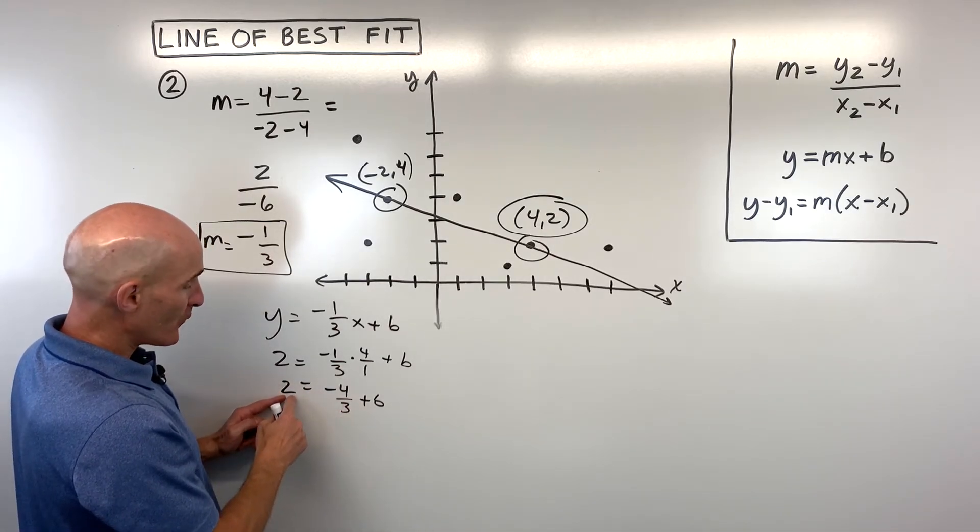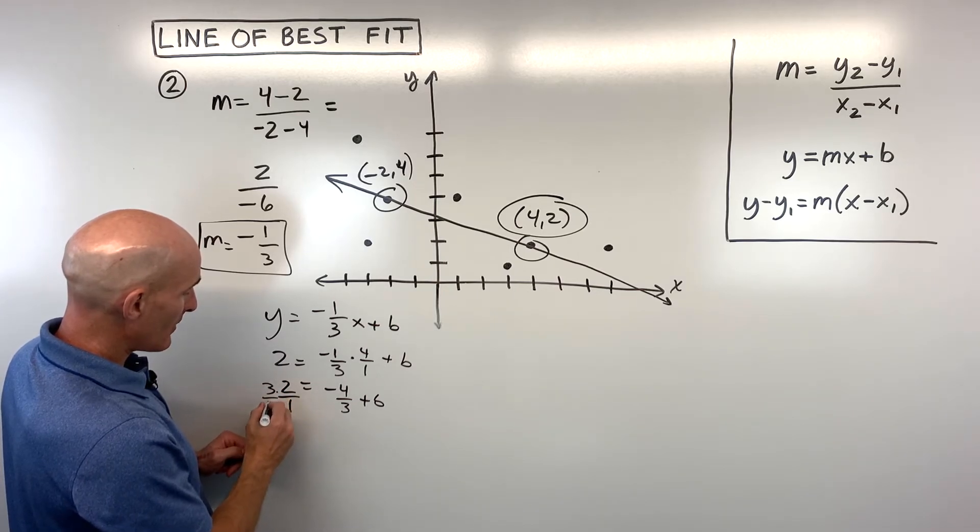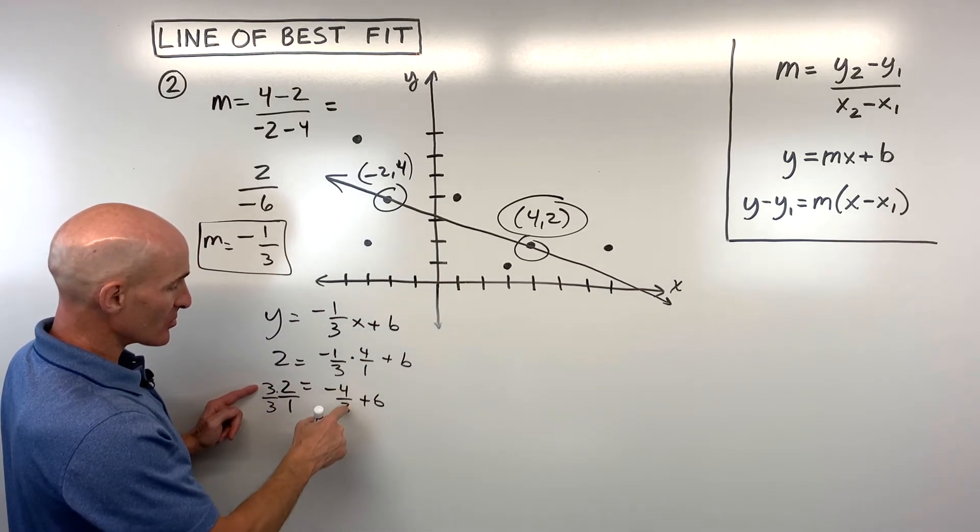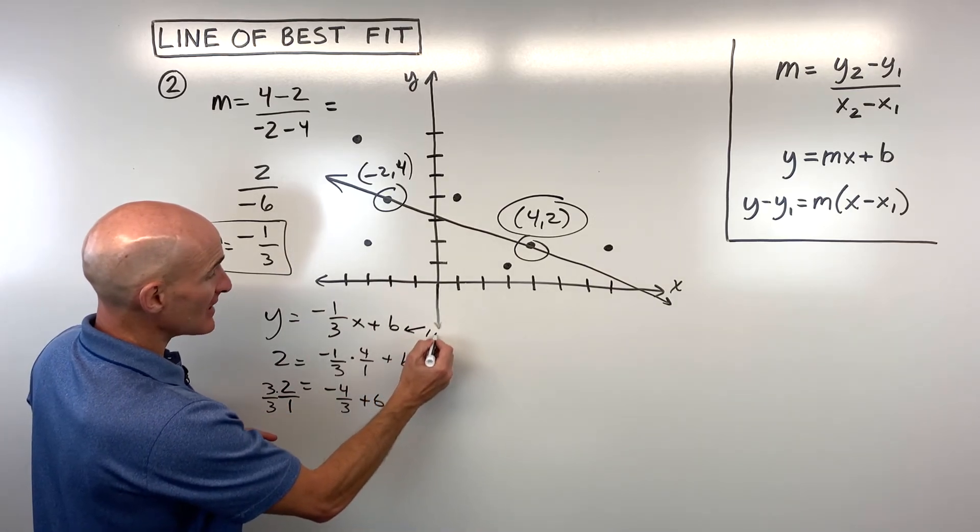I'm going to add the 4/3 to the other side. Now 2, if we multiply the top and bottom by 3, that's actually 6/3 plus 4/3 gives us a b value of 10/3.